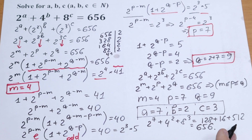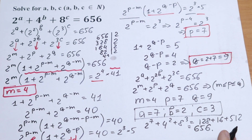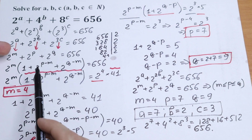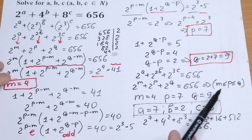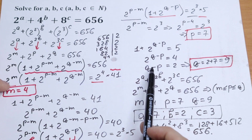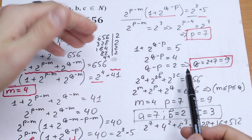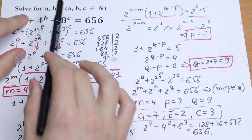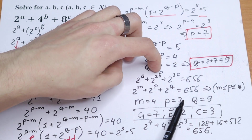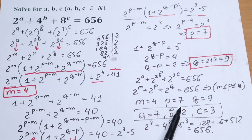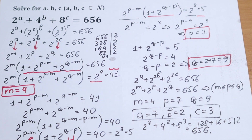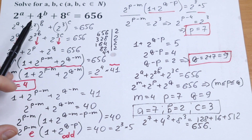This is a really interesting algebra problem — I really like this kind of problem. We had a long step-by-step explanation: first factoring out 2 to the power m to find m, then factoring to find p equals 7, then solving a simple expression for q equals 9, and finally determining the unique integer combination a equals 7, b equals 2, c equals 3. Thank you so much for watching, subscribing, and liking. See you in the next algebra problem — have a great day!